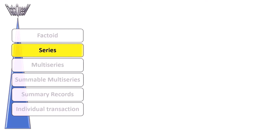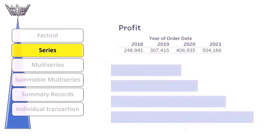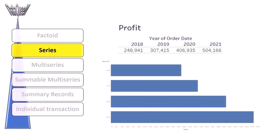Then there is the series dataset, where one type of dependent variable is compared to an independent variable. Often, the independent variable is time. We can compare just the rate of change with this level of dataset.